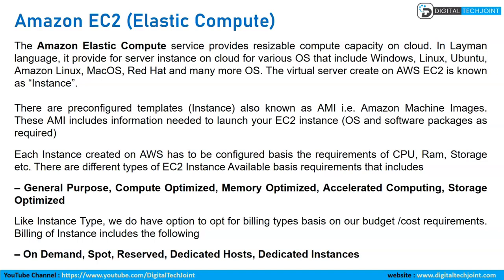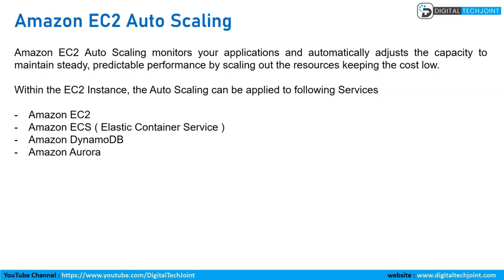The EC2 instance service has different instance types depending upon the requirement: general purpose, compute optimized, memory optimized, and storage optimized. There are also various cost models — on demand, spot instance, reserved, dedicated host, and dedicated instance. On-demand instances are what the majority of users use. When you go for dedicated host or dedicated instance, you get a huge discount because you are committing your server on the cloud for at least one to three years.